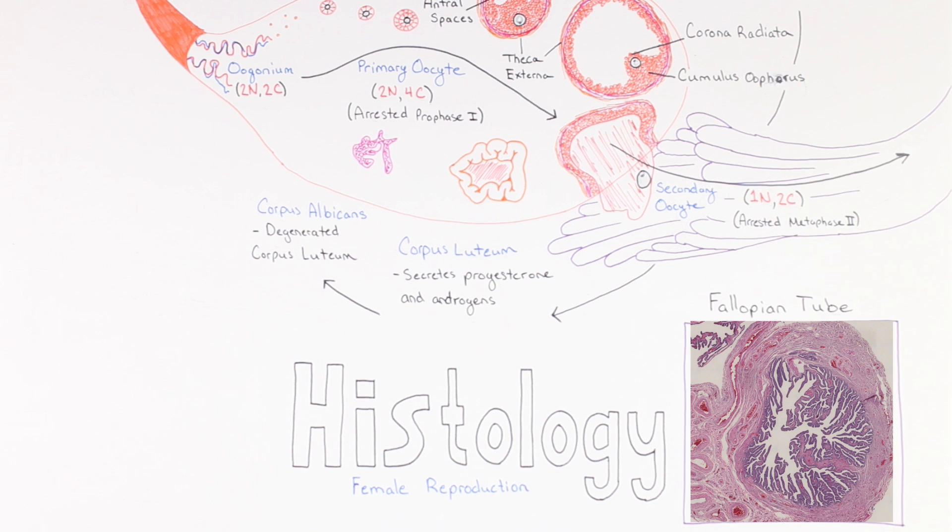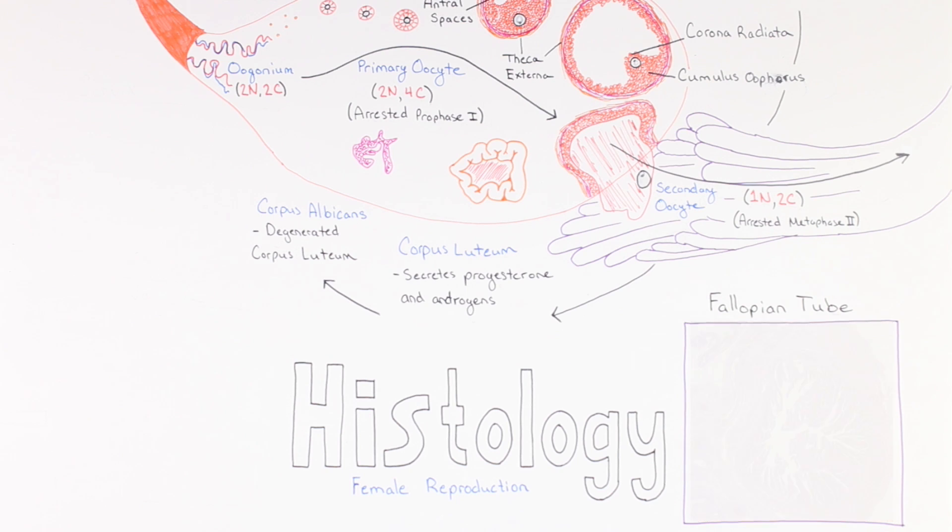If sperm enters the female tract and reaches the oocyte in the fallopian tube, the sperm cell will penetrate the outer coating of the secondary oocyte. This will initiate the oocyte to complete meiosis II, forming the mature haploid ovum prior to fusion of the sperm with the ovum's genetic information to form a diploid zygote.